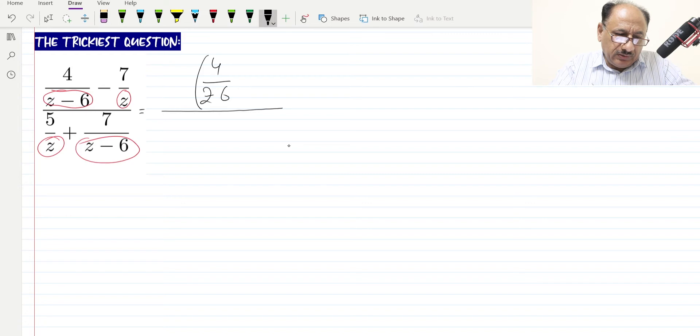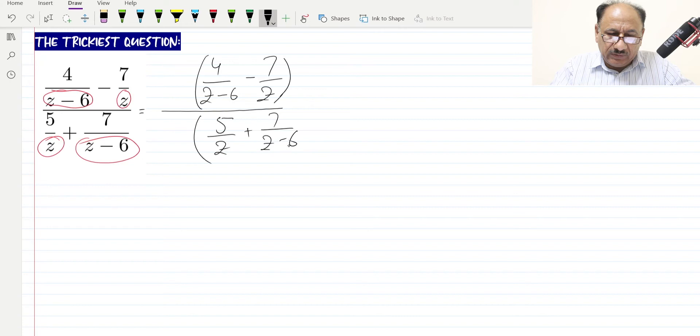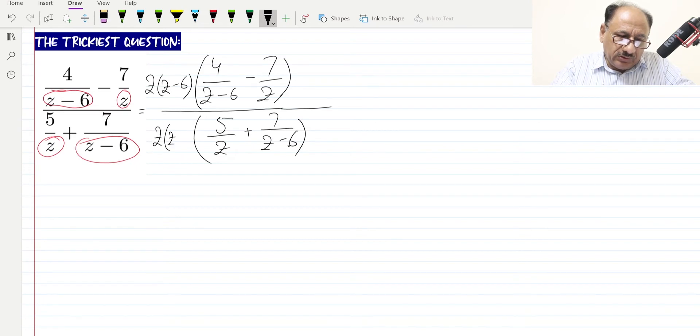I will rewrite this question: 4 over z minus 6, minus 7 over z. Similarly, the denominator we can write as 5 over z minus 6, plus 7 over z. Now we will multiply this with z times z minus 6 in both numerator and denominator. Why did we choose z times z minus 6?